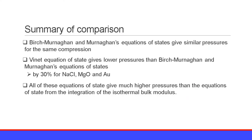In summary, the comparison is as follows: Birch-Murnaghan and Murnaghan's equations of state give similar pressures for the same compression. Vinet's equation of state gives lower pressures — about 30 percent lower than Birch-Murnaghan and Murnaghan's — for NaCl, MgO, and gold. All of these equations of state give much higher pressures than the equation obtained by assuming a constant isothermal bulk modulus.